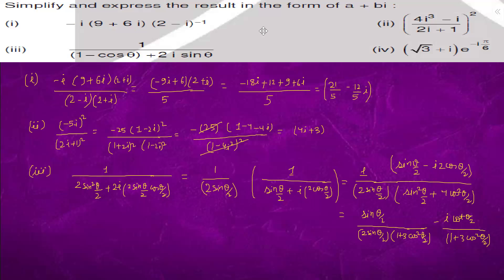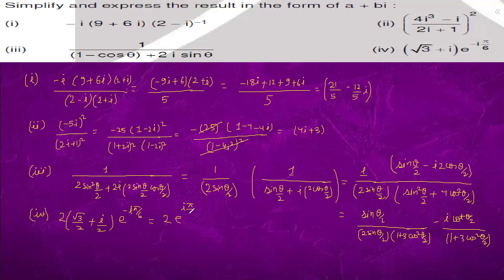Question 4: if we divide and multiply with 2, it comes out to be root 3 by 2 plus iota by 2, into e to the power minus iota pi by 6. Since root 3 by 2 is cos 30 degrees and 1 by 2 is sine 30 degrees, this can be written as e to the power iota pi by 6 into e to the power minus iota pi by 6, which is e to the power iota times 0, which equals 2. The answer is 2.